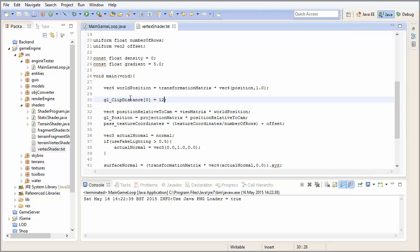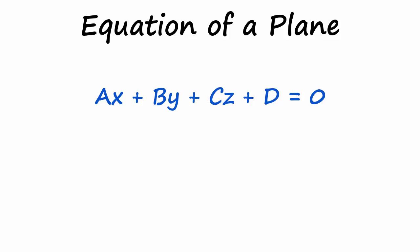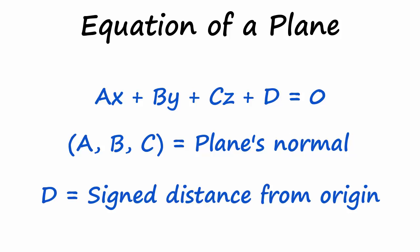That's obviously not very useful to us — we need to actually have a plane that we can define, and then calculate the distance of each vertex from that plane. To define a plane we need to know the equation of the plane. I'm not going to explain plane equations here because this isn't a maths tutorial, but basically this is a general plane equation where ABC is the normal of the plane, and D is the distance of the plane from the origin. If you want to learn more, I've put some links in the description.